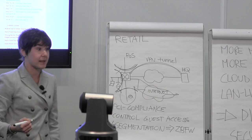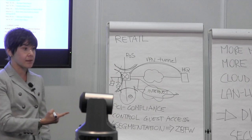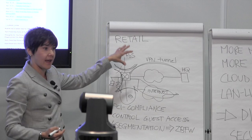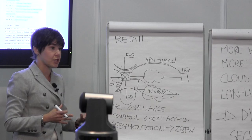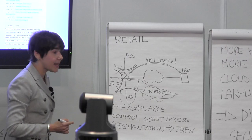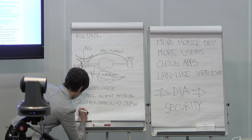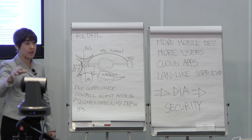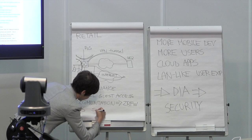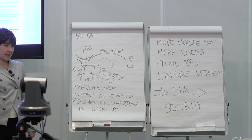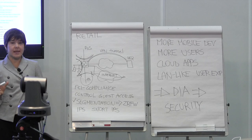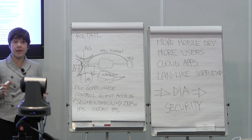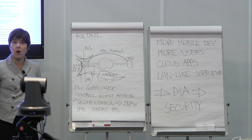But it doesn't stop here. PCI compliance requirement 11 demands that the cardholder data environment must go through sustained inspection against vulnerabilities, making an IPS system a critical part of branch deployment. IPS stands for intrusion prevention system. We actually launched here at Cisco Live yesterday a Snort IPS running on your branch router. Snort IPS is based on open source Snort, an industry-recognized intrusion prevention system with more than 4 million downloads — one of the most widely deployed IPS systems in the world.